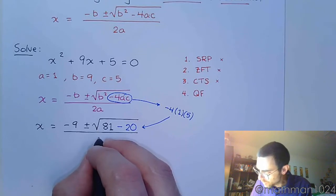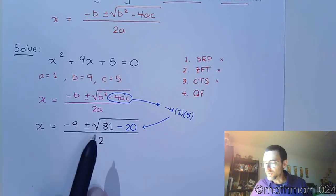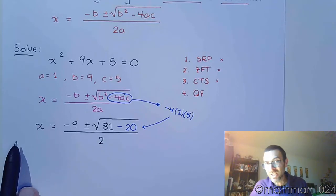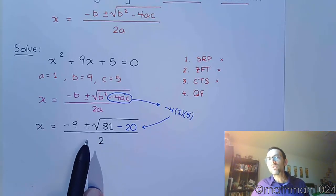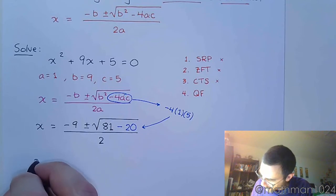And this is all over 2a. So let's see, a is 1. 2 times 1 is 2. Something that I mentioned before is that this fraction bar does not go underneath the x equals. The fraction bar is also not contained inside the radical. The radical is sitting on top of it.